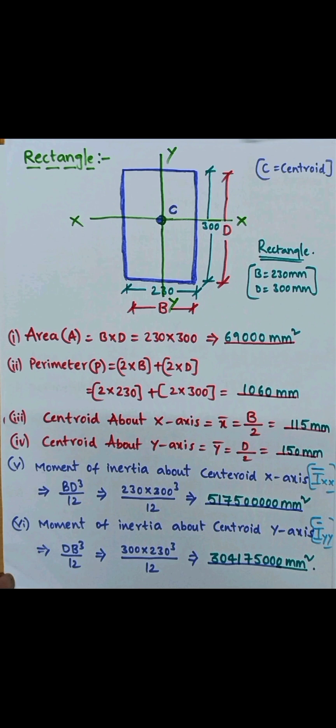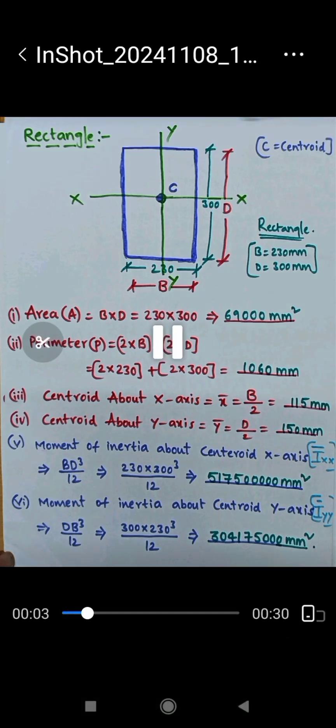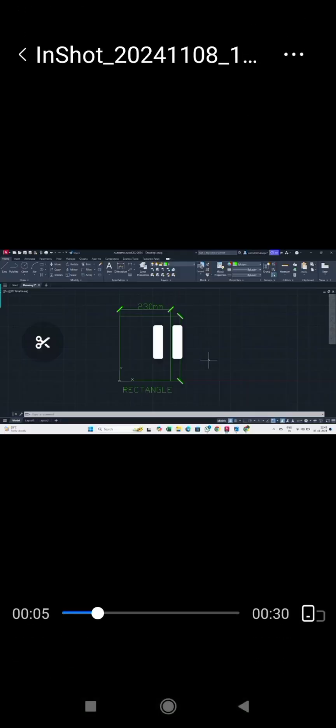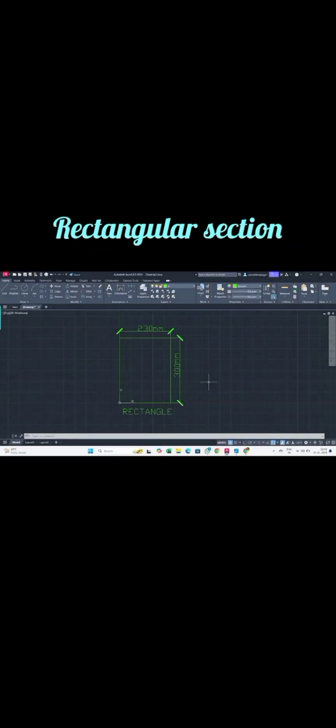The same what we are calculating with so much pain. So now we can get within a fraction of seconds. Now this is the AutoCAD. You can see the environment in AutoCAD. Now the rectangle was drawn with width 230 and depth 300.